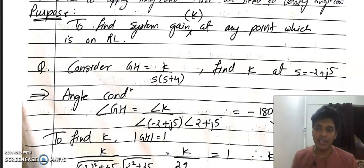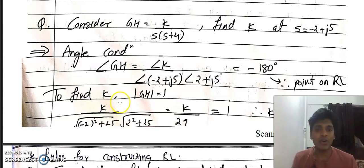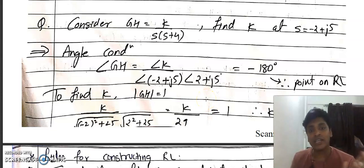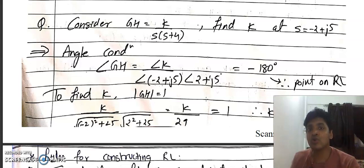This will be clear by using an example. We can find the value of K at s = -2 + j5. So first we need to check the angle condition — we use a top-down approach: check angle condition first, if satisfied the point is on the root locus, then apply magnitude condition to get the value of K.